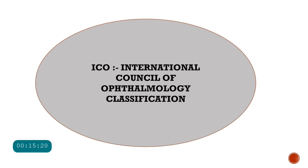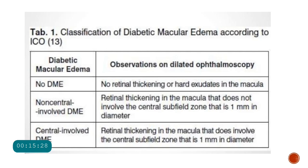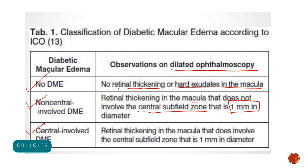The next classification is the International Council of Ophthalmology classification of diabetic macular edema, based on dilated ophthalmoscopy. If there is no retinal thickening or hard exudates in the macula, it is classified as no DME. There are then two categories: non-central involving and central involving diabetic macular edema. For this, they consider whether the central subfield zone — one millimeter in diameter centered on the fovea — is involved.